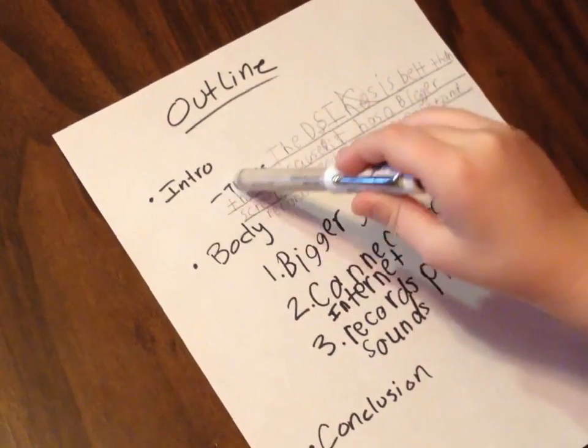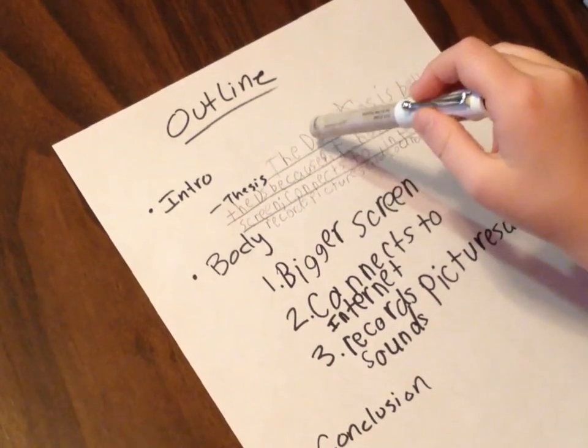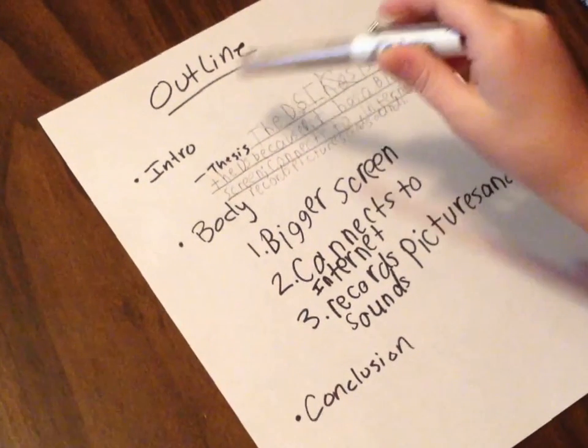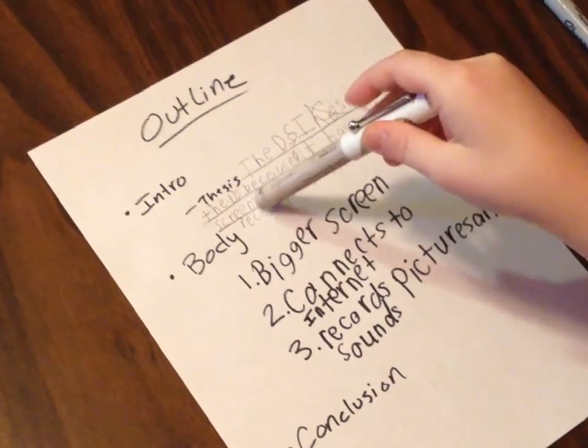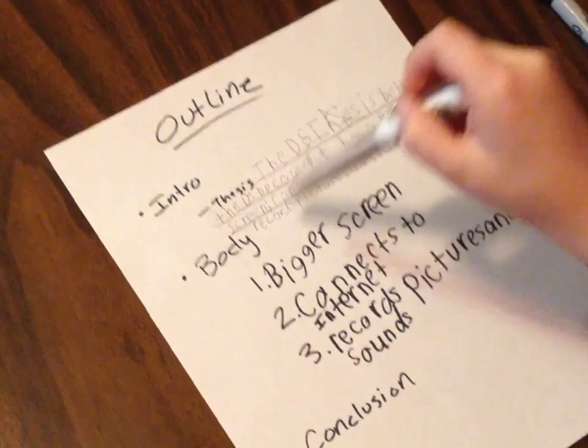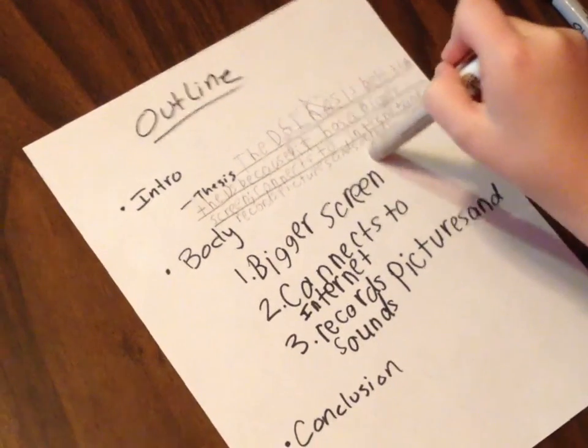The thesis should be: "The DSi XL is better than the DS because it has a bigger screen, connects to the internet, and records pictures and sounds." The thesis statement is the last sentence of the introductory paragraph. But what do we write before that to have an entire introduction? I'm going to ask Ryan some questions to help him figure out some sentences to come before the thesis statement.